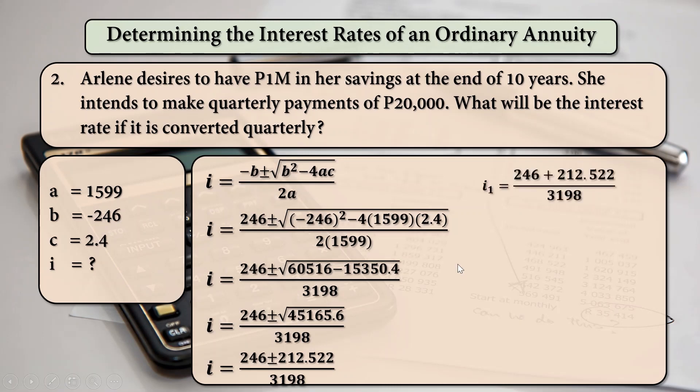And then for i1, we are going to use the plus. So, that is 246 plus 212.522 all over 3198. Or, that is equal to 0.143478. For i2, we are going to use the minus sign. So, that will be equal to 0.01047. And here, since both of them are positive, we are going to take which value is lesser than the other. So, 0.01047 will be taken as our i.